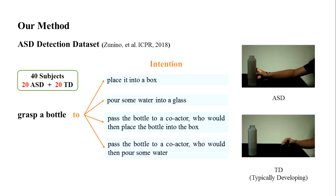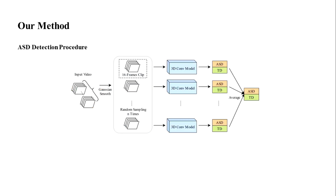Here are two sample videos from the dataset. In our work, we propose the following ASD detection procedure: when given a video, Gaussian smoothing is applied to each frame first, and then we randomly sample 16 consecutive frames n times from the video. These clips are then fed to 3D computational models, and the outputs are averaged to form the final result.